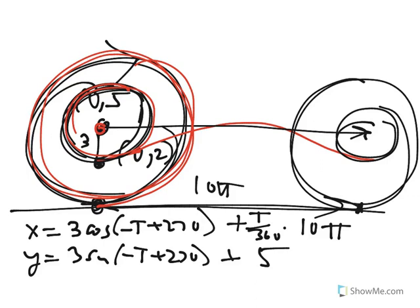And that thing is called like a curtate trochoid, I think. I can't remember exactly what it's called, but that's how I would describe it—as a point on a moving wheel, not on the circumference of that wheel. That takes care of the cycloid and a related curve.